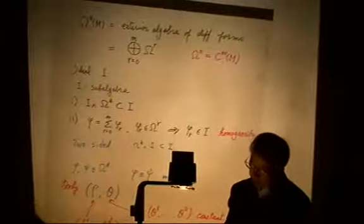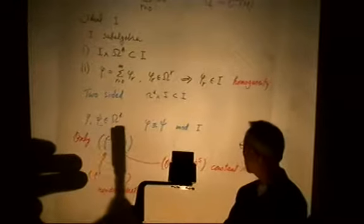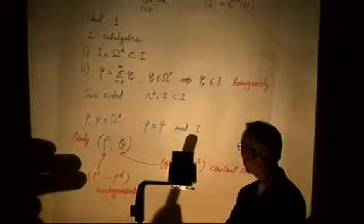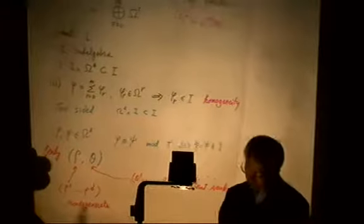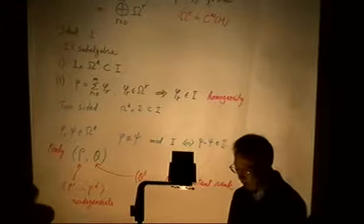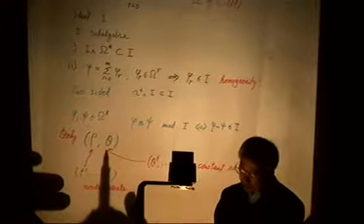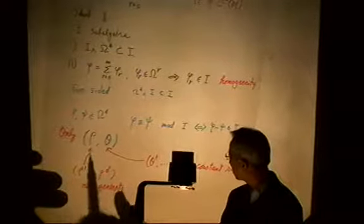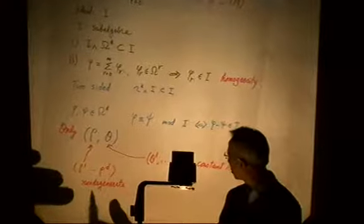Because of the homogeneity condition, this is actually a two-sided ideal — two-sided means omega-star times i is also in i. Two elements of the exterior algebra are said to be equivalent modulo i if their difference belongs to the ideal.